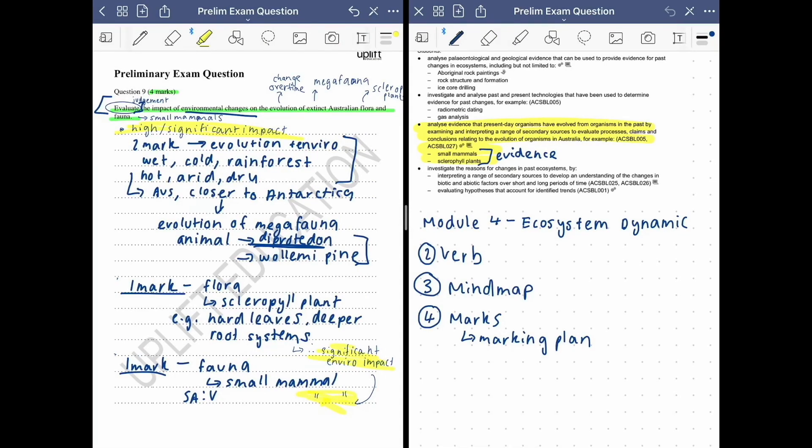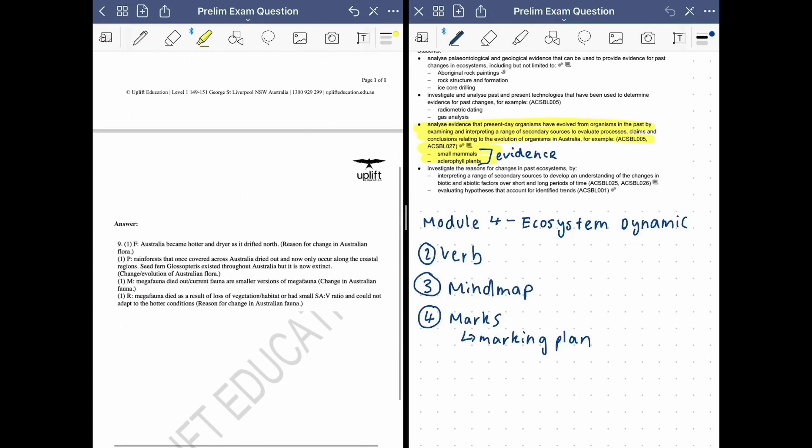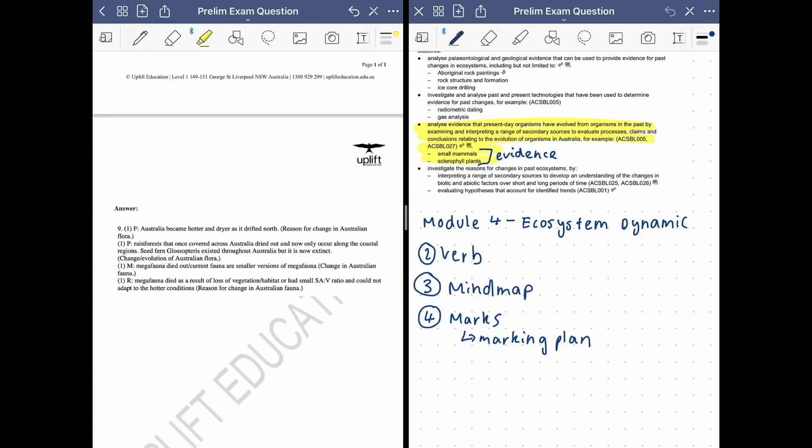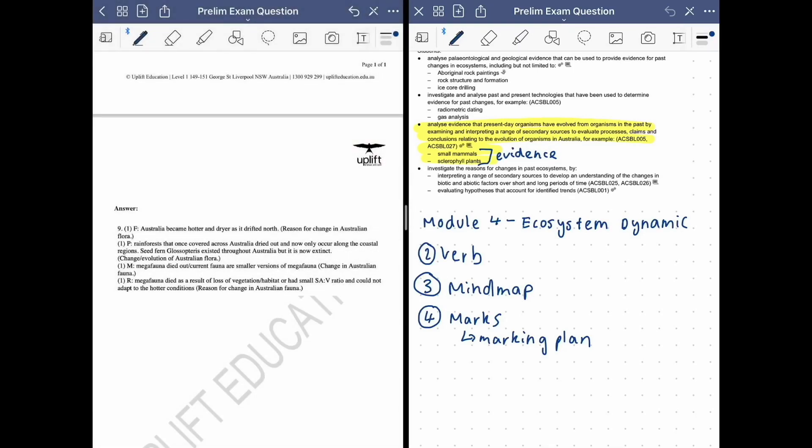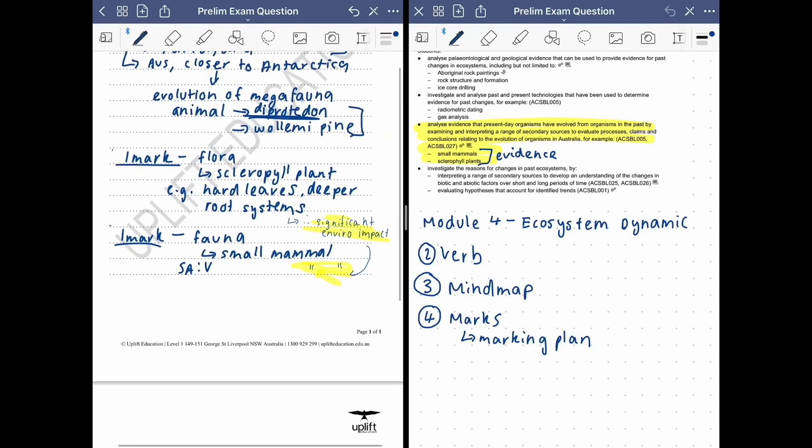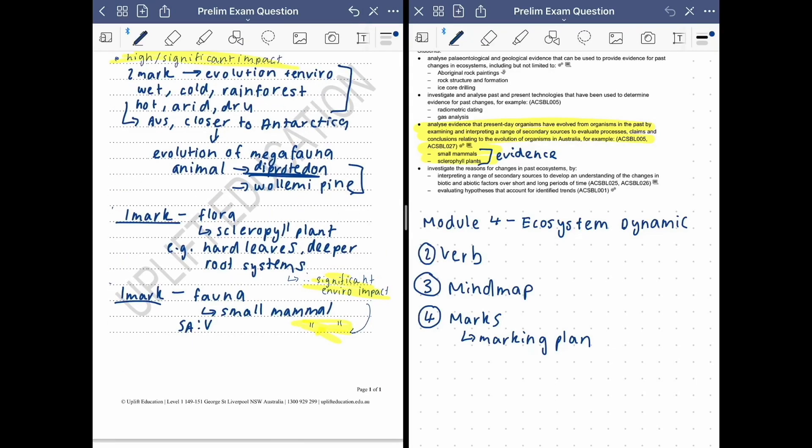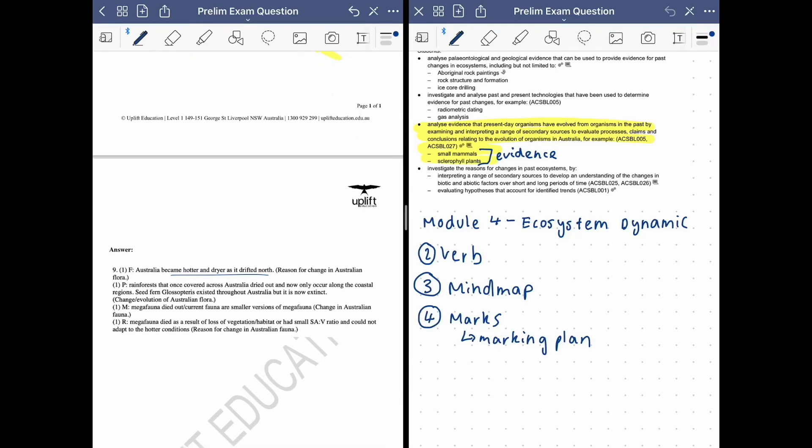Let's have a look at the sample answer to see if we were able to cover what it was asking us for. So you can see over here question nine, so one mark was allocated to it saying Australia became hotter and drier as it drifted north. So we can see that towards here. So we have mentioned that Australia closer to Antarctica moved north. We've got that so we'd get a mark for that.